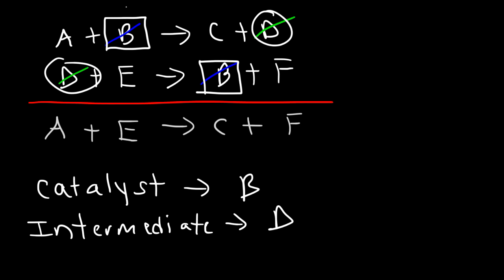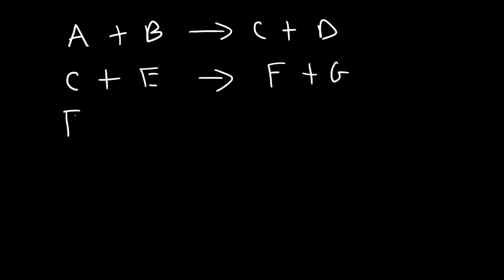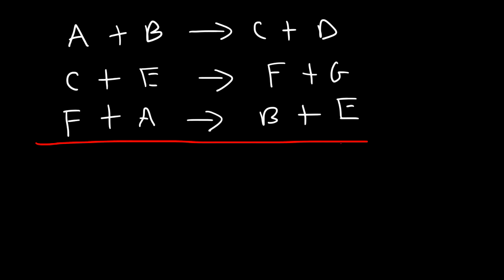But the catalyst is present at the beginning and at the end. Now let's consider another example: A plus B yields C and D, then C plus E produces F and G, and in a third step, F plus A makes B plus E. So given these three steps, identify the intermediate and the catalyst. There are going to be two catalysts and two intermediates in this example.